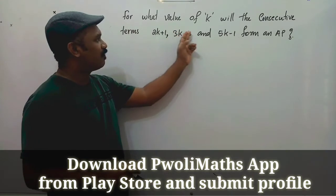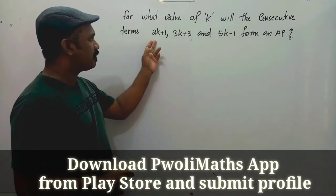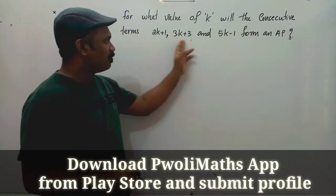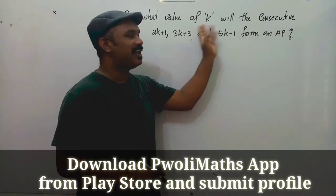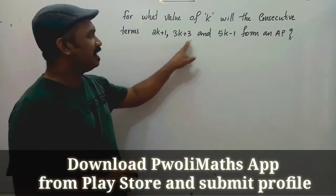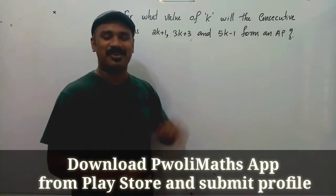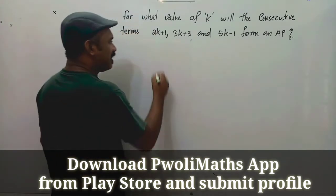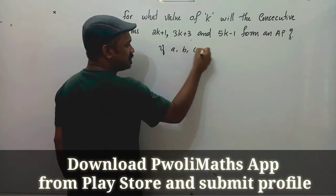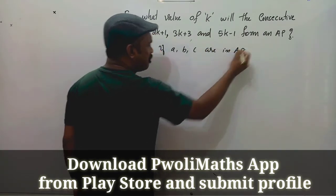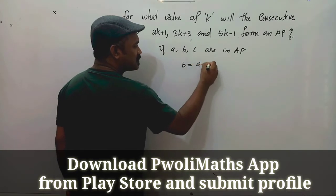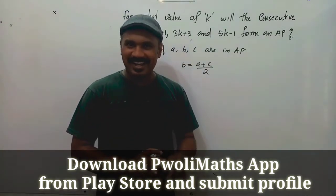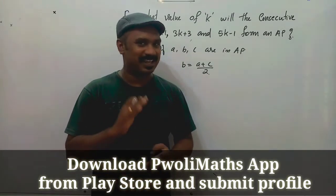Now let's do a question. For what value of k will the consecutive terms 2k plus 1, 3k plus 3, and 5k minus 1 form an AP? If A, B, C are consecutive terms of an AP, then B equals A plus C divided by 2, or 2B equals A plus C. We apply that formula here.